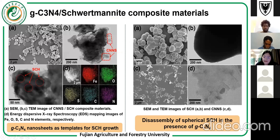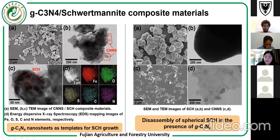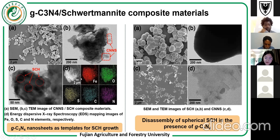With that motivation, we synthesized a series of composite materials based on Schwertmannite mineral and carbon nitride nanosheets. We can see the original Schwertmannite mineral and carbon nitride nanosheets. We disassembled the Schwertmannite into smaller nanoparticles, about 200 to 300 nanometers, that are attached to the carbon nitride nanosheets to form the composite. Elemental mapping shows the uniform distribution of iron, sulfur, carbon, and nitrogen.